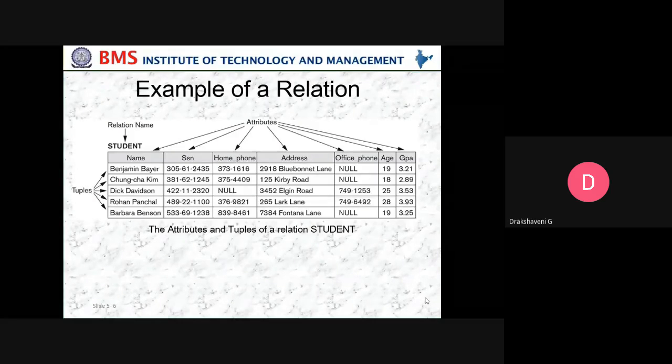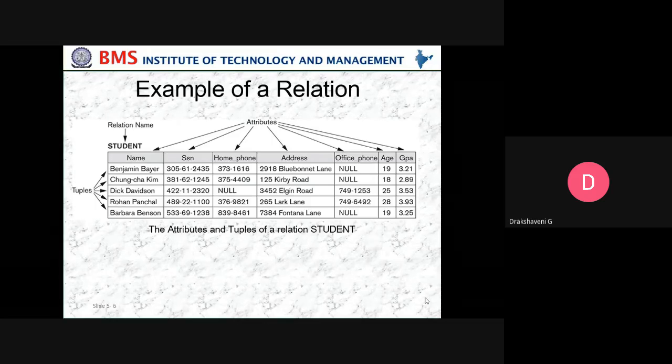An example of a relation: the relation name is Student. The column names are the attributes: Name, SSN, Phone Number, Address, Office Phone Number, Age, and GPA. The tuples are the rows — Benjamin, Dick, Rohan, Barbara, and others are the tuples in the student relation. These are the attributes and tuples of the relation.